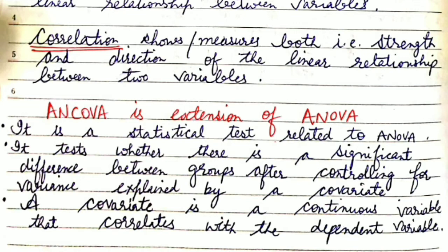Hence, ANCOVA is an extension of ANOVA because it is a statistical test related to ANOVA. It tests whether there is a significant difference between groups after controlling for variance explained by a covariate. A covariate is a continuous variable that correlates with the dependent variable.